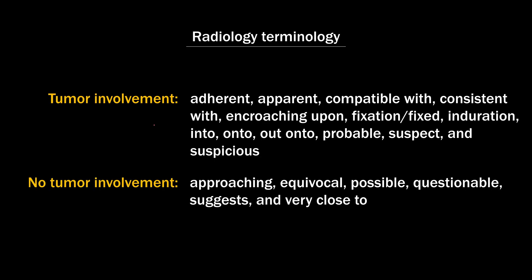These are two lists of words published by the American College of Surgeons. The first list is used to mean tumor involvement and the second list is used to mean no tumor involvement. The main idea is that when we use a word, it might mean something in our heads but something different in the heads of the recipient of that report. So it's important to choose our words wisely.